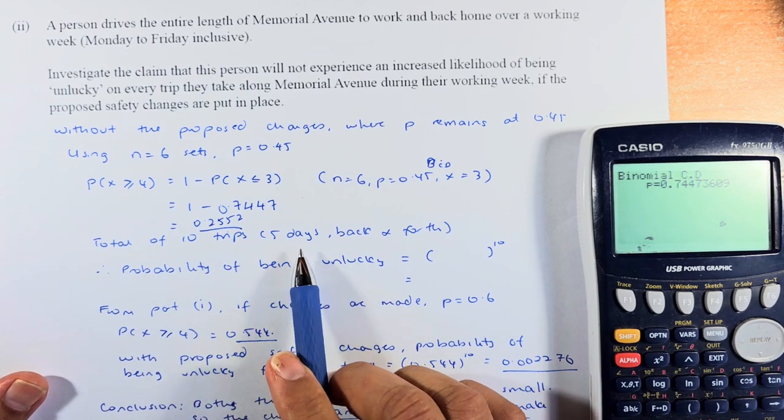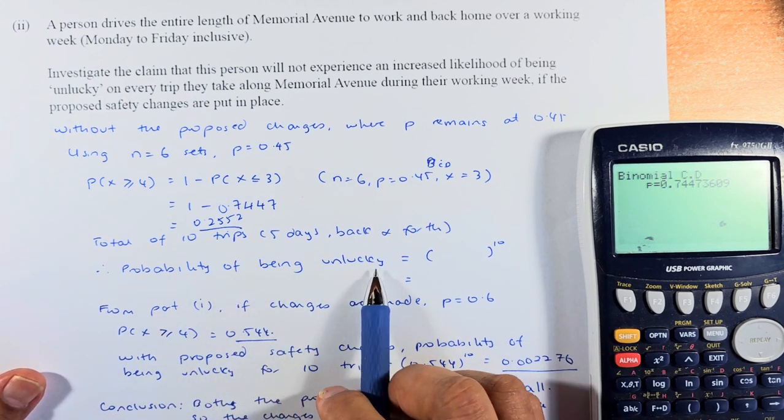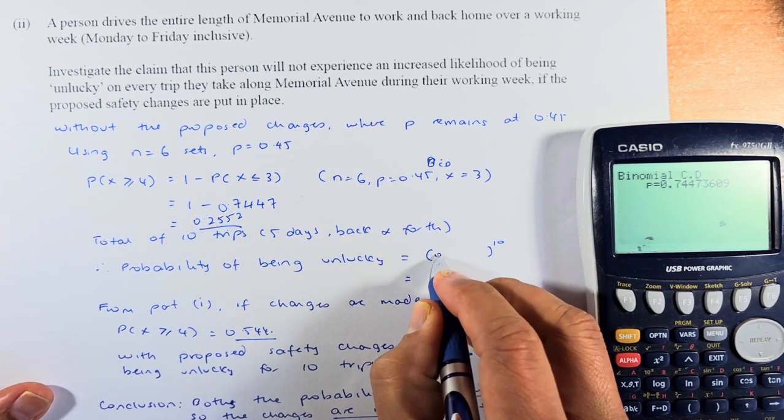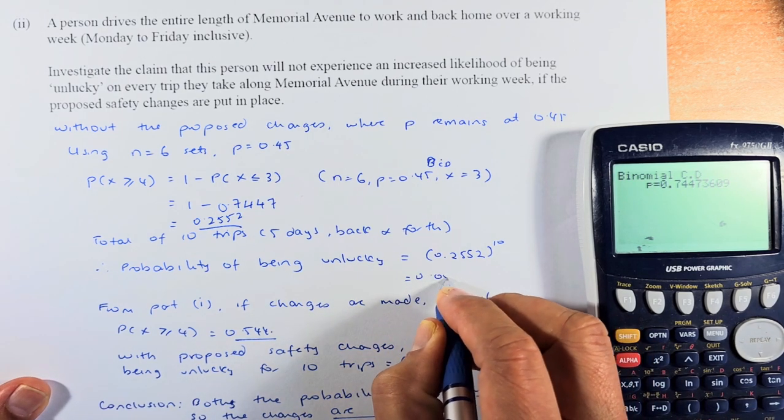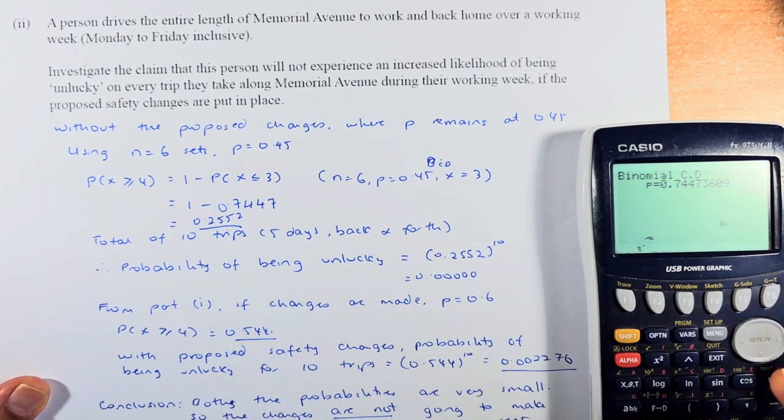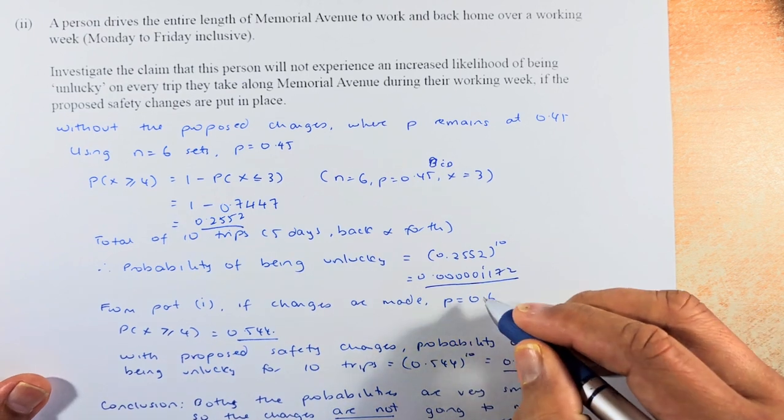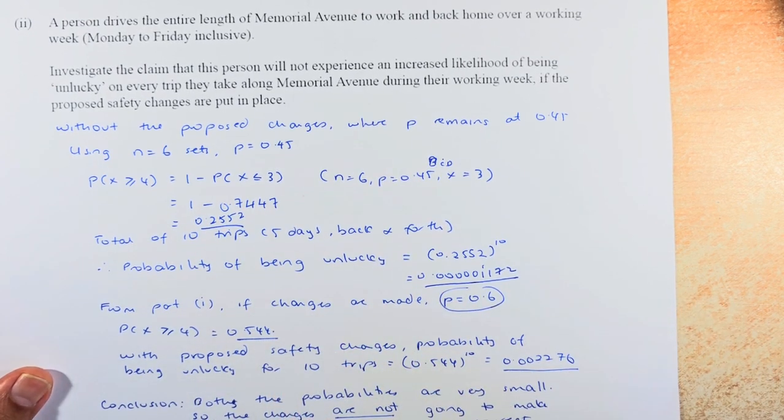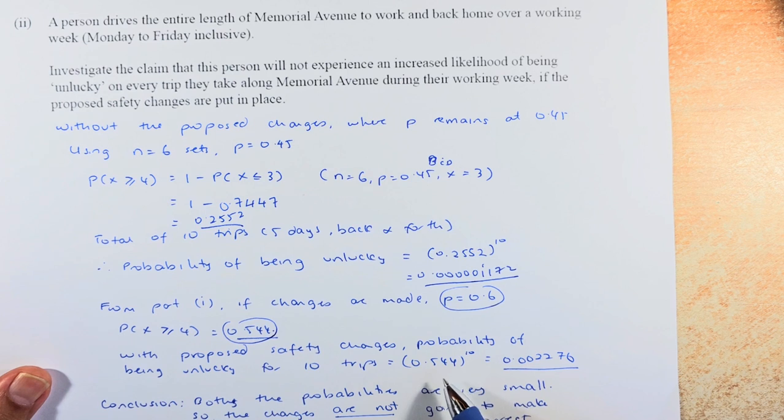Now, the total of 10 trips. Because there are 10 trips, 5 days back and forth, the probability of being unlucky, use this formula: 0.2552 to the power of 10. If you put in the calculator, it is going to be quite a small number, 0.0000001172. If changes were made, the probability of 0.6, we found that the probability from part 1 is 0.554. So if you do 10 days or 10 trips, 0.554 to the power of 10 is 0.002276.